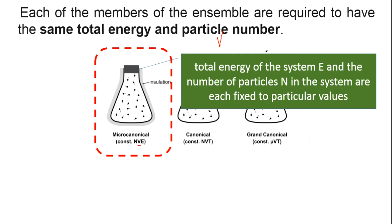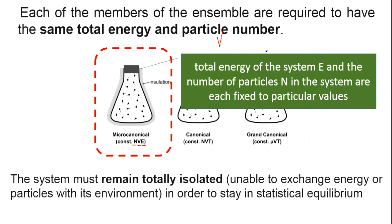For the micro canonical ensemble, the total energy and particle number N must remain the same. For this, the system must remain totally isolated — that is, it must be unable to exchange energy or particles with the environment. The system is closed with insulation such that there is no exchange of energy between inside and outside, and also no exchange of particles. For statistical equilibrium, the system must remain totally isolated in terms of both energy and particles.